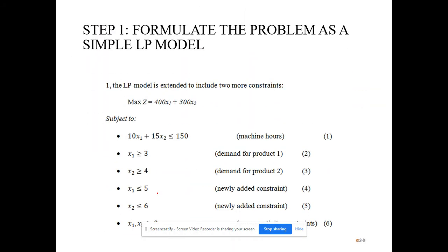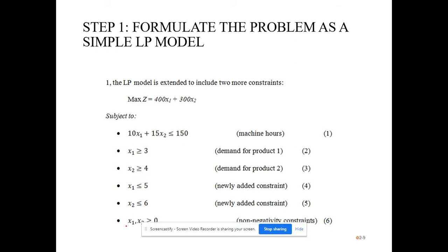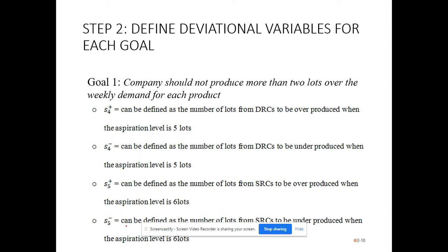Looking at the constraints with the new goals: maximize profit = 400·x1 + 300·x2, subject to machine hours constraint, x1 ≥ 3, x2 ≥ 4. New constraints are added: DRC lots must be less than or equal to 6 and SRC lots less than or equal to 6. For goal one, S4-plus is the number of lots overproduced over the aspiration level of 5 for DRC, and S5-minus is the underproduction from the aspiration level of 6 for SRC.